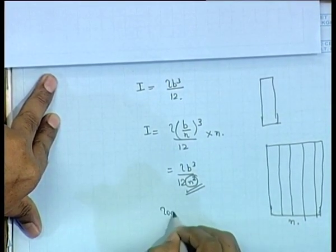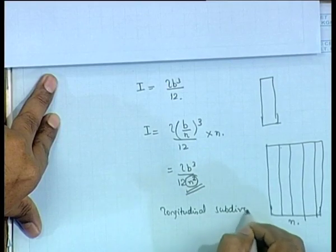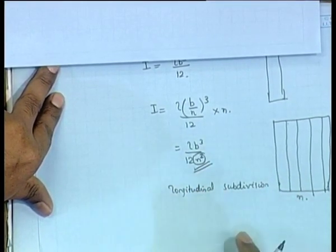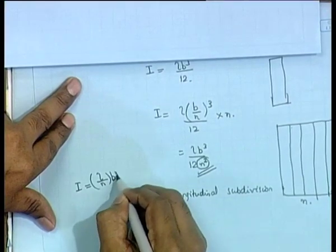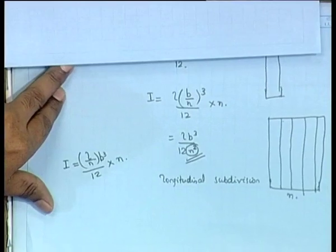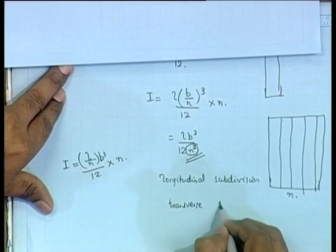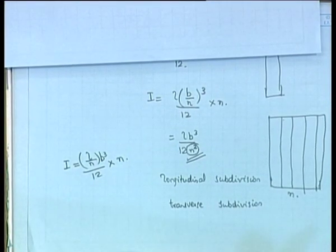This is known as longitudinal subdivision — longitudinal subdivision of the whole tank. If you divide it longitudinally, you end up with a very low value of I, which means it does not affect your stability so much. But what will happen if you divide the tank transversely? There is no change — it becomes L/N × B³/12 × N, which is the same thing. So there is no point in transverse subdivision.